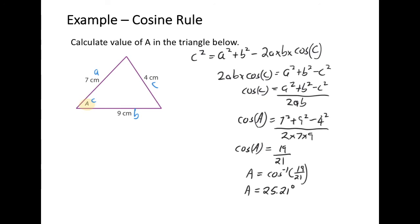So my unknown angle a in the original example is equal to 25.21 degrees. That is an example of how to use the cosine rule to find the missing angle in any triangle.